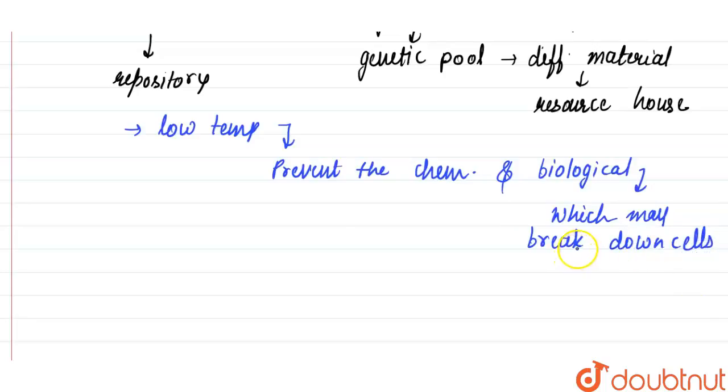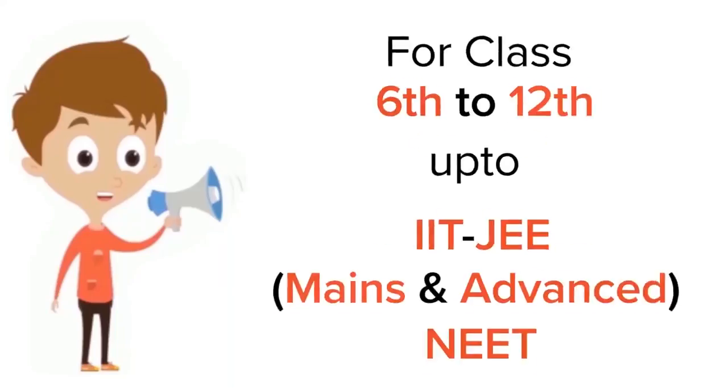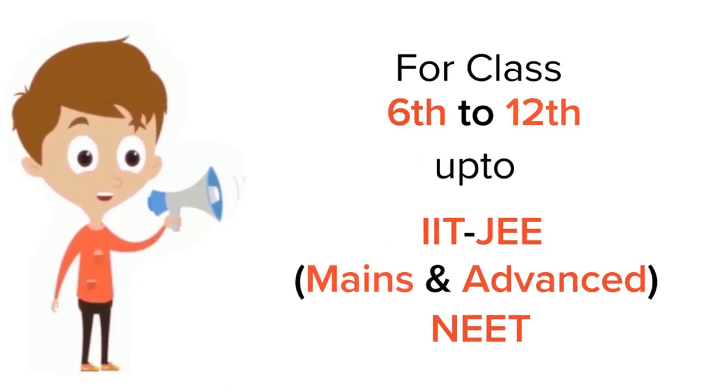Some banks freeze material in nitrogen. Materials are frozen at minus 196 degrees Celsius. Therefore, the correct answer for the question is that endangered plant species are conserved through the gene bank. Thank you. For class 6 to 12, up to IIT-JEE and NEET level, trusted by more than 5 crore students, download Doubtnet app today.